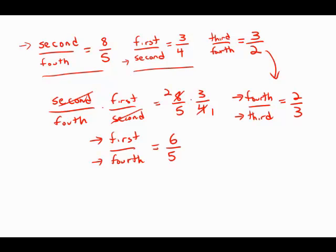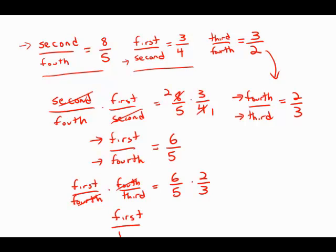So I'm now going to multiply these first over fourth times fourth over third, and this is 6 over 5 times 2 over 3. Now, the fourth graders cancel, what we're left with on the left side is the ratio they've asked for, the first graders over the third graders.